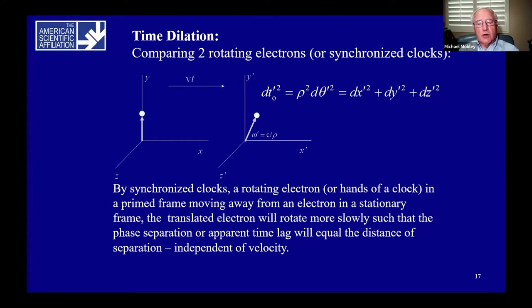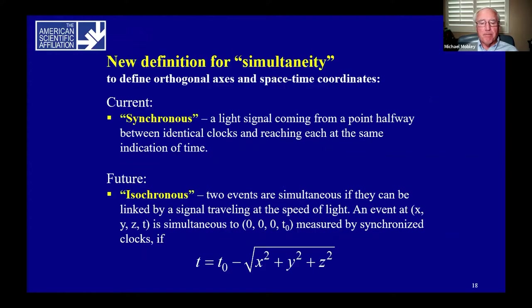By synchronized clocks, when a rotating electron in a prime frame is moving away from an electron in a stationary frame, the translated electron will rotate more slowly such that the phase separation or apparent time lag will be equal to the distance of separation. This is independent of velocity. Separation in distance is separation in time. These results suggest examining an alternative definition for simultaneity.